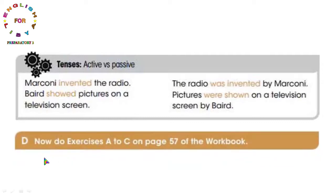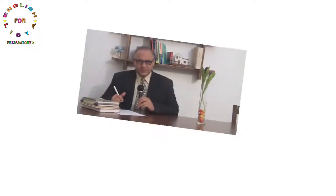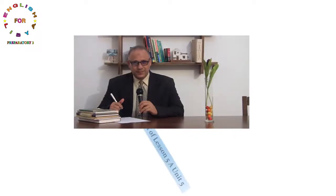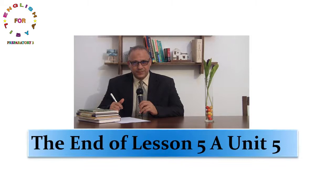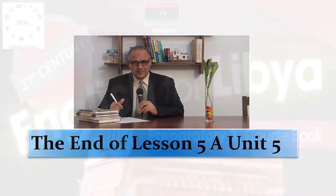Exercise D: افعلوا التمارين A إلى C في صفحة 57 من كتاب التمارين، وهذا إن شاء الله سنحله معاً في الحلقة القادمة. وصلنا إلى نهاية الدرس. This is the end of Lesson 5A, Unit 5. الجزء الأول من الدرس الخامس من الوحدة الخامسة. نلتقي في الحلقة القادمة. Thank you very much for watching and good luck for all of you.